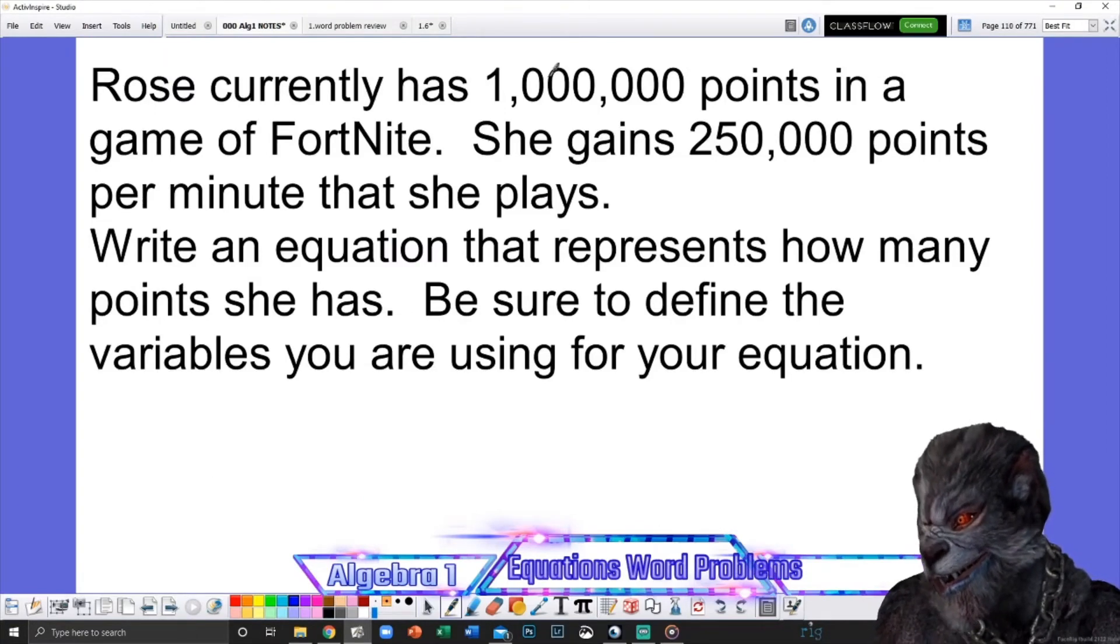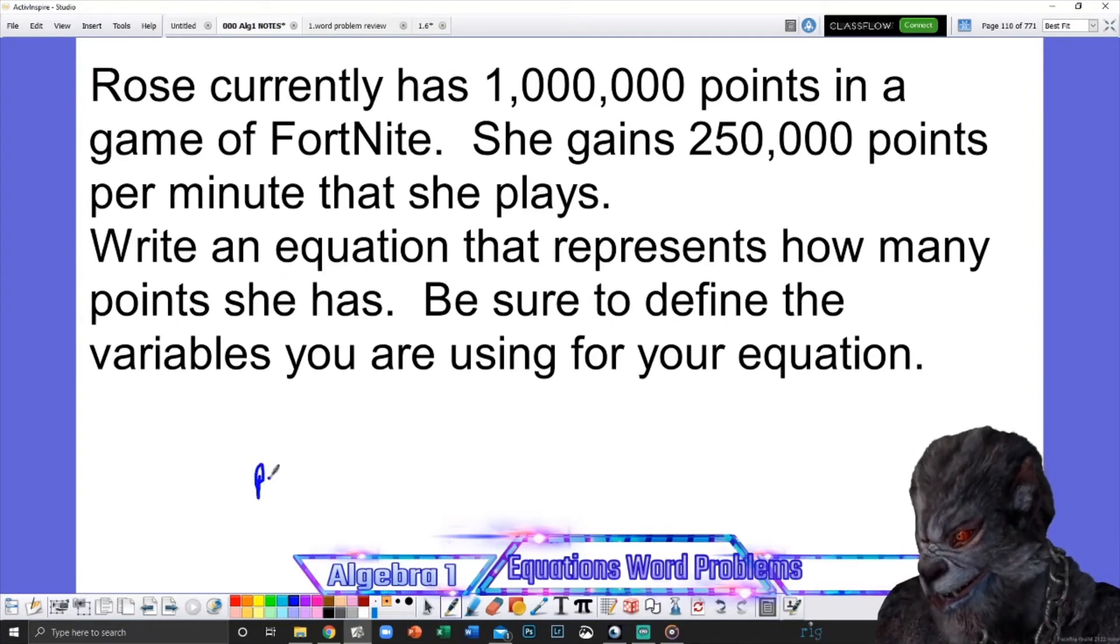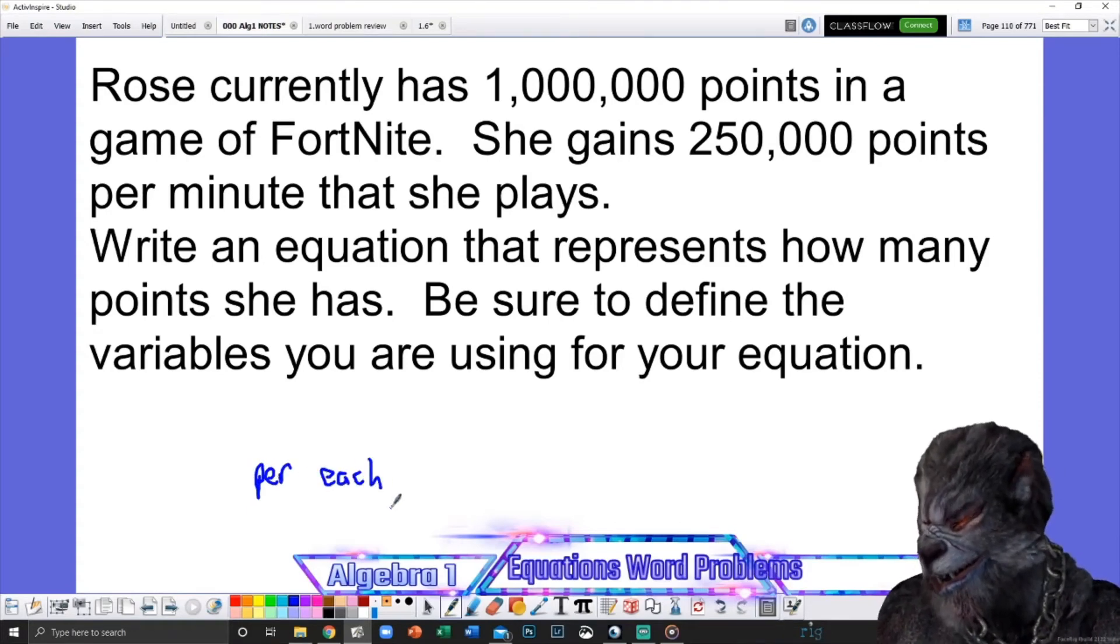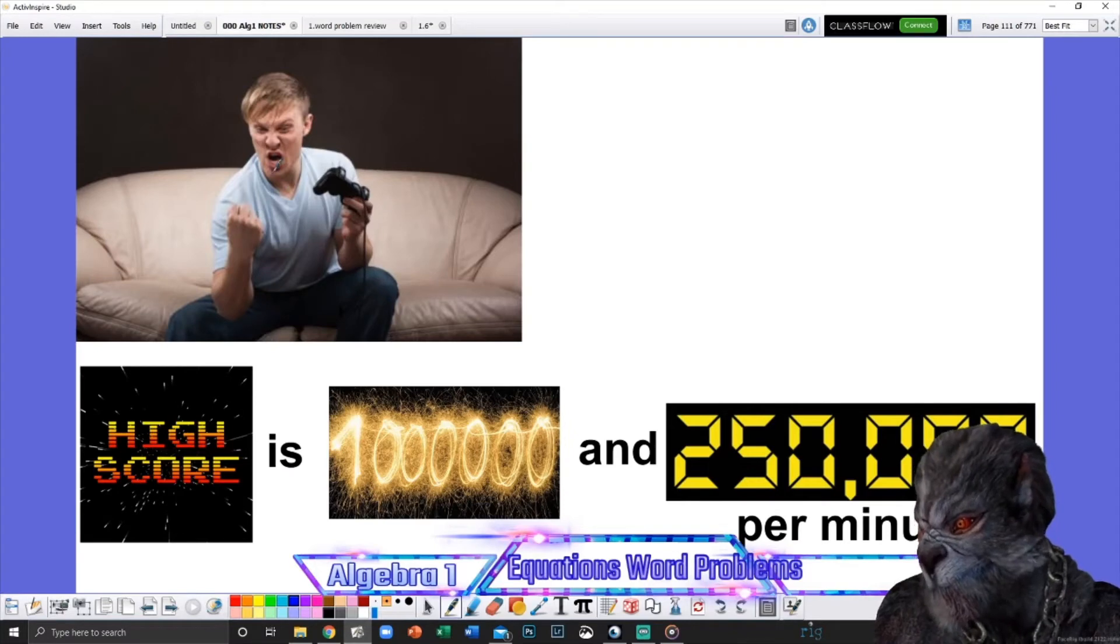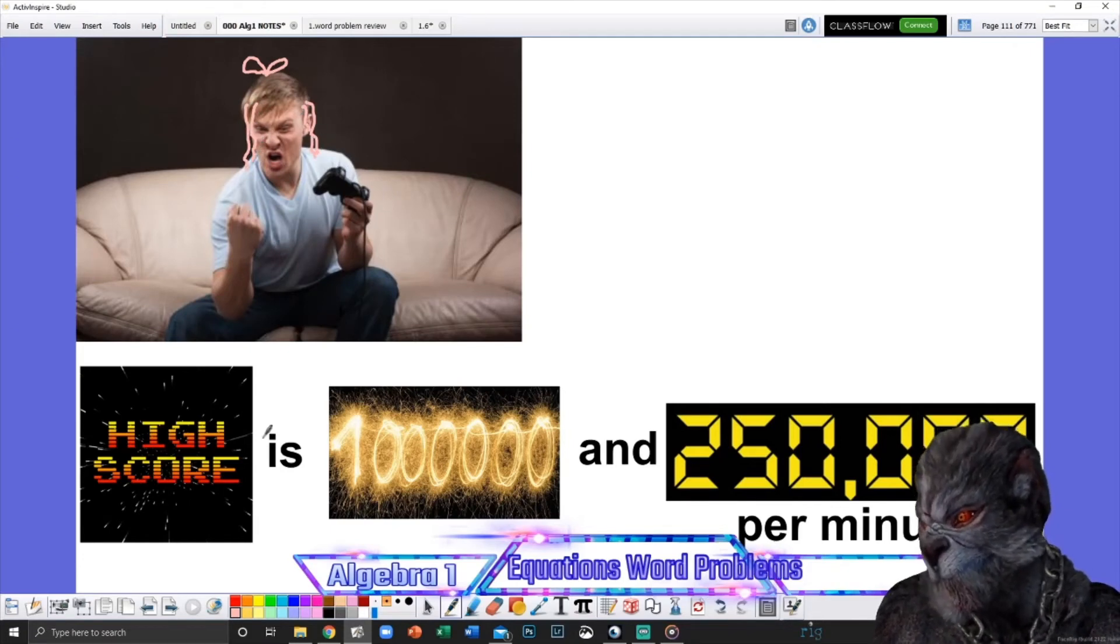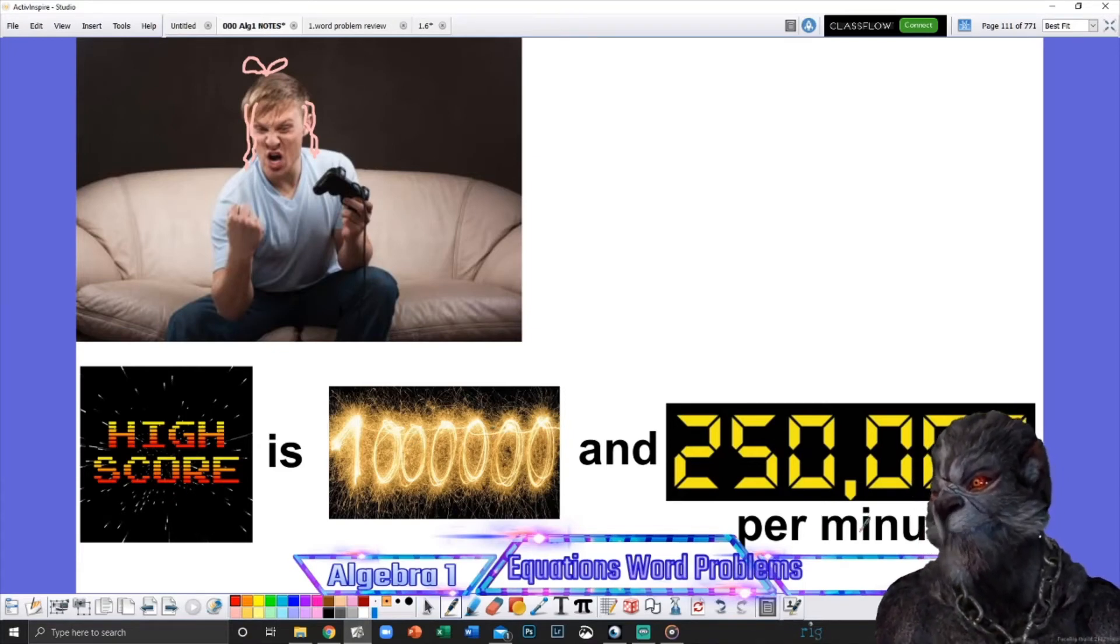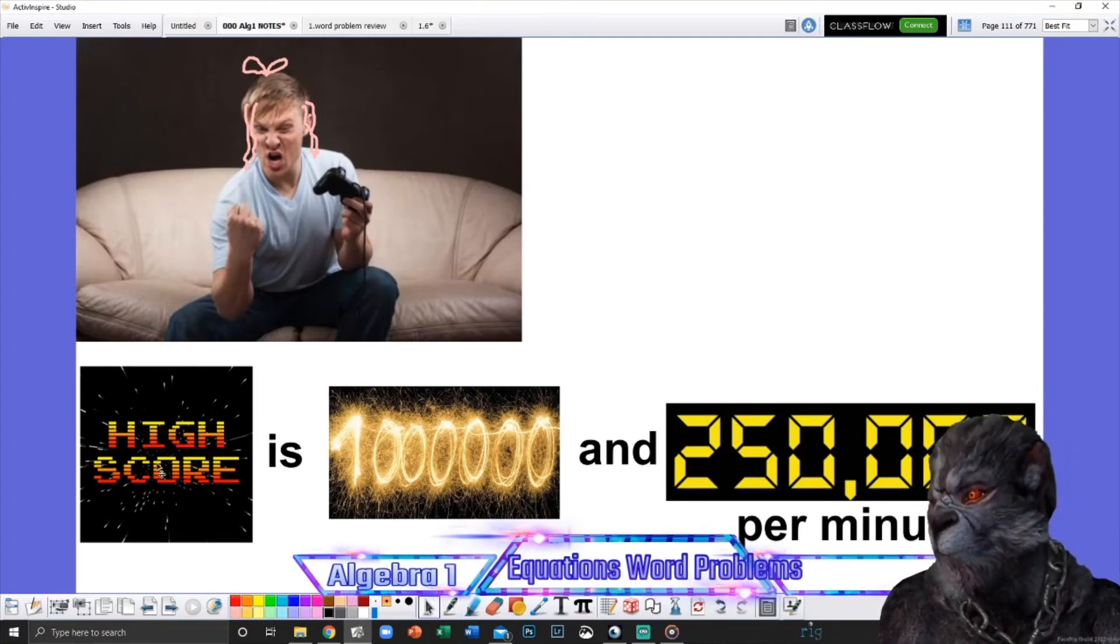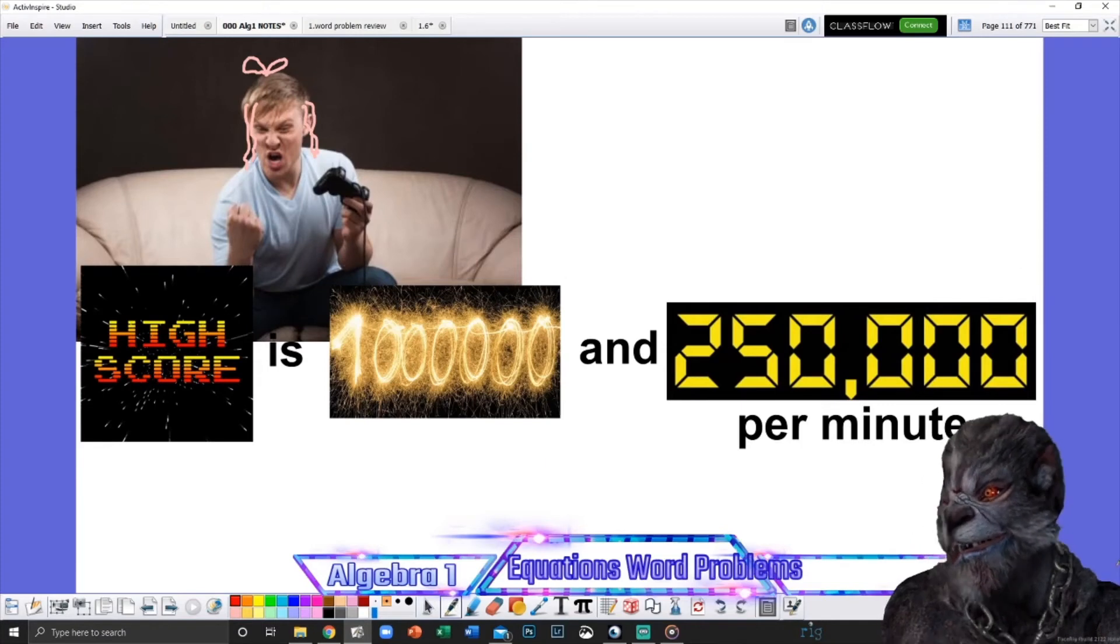Rose. Rose currently has 1 million points in a game of Fortnite. She gains 250,000 points per minute that she plays. We're going to, again, write the equation and define the variables. Remember, we're looking for the word per or each. I think you can do this one on your own. Go ahead. Give it a shot. See what you get. All right. Here's Rose. Sorry. I used to have Rose's picture. So you're going to have to picture maybe like a ribbon here and longer hair. And all right. He makes an ugly girl. But you know what I mean. So we've got Rose here. Her high score is a million. And then she was getting 250,000 points per minute. Notice that I've done this for every problem. For you, maybe it would be helpful to do something like this for each problem. It's up to you. Whatever is helping you get the right answer. But before we go and do the equation, first we need to know our two variables.